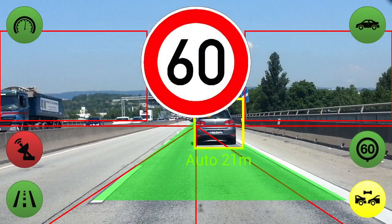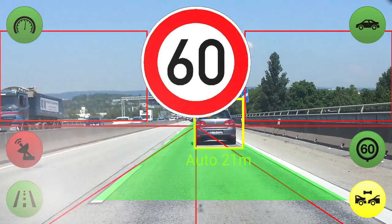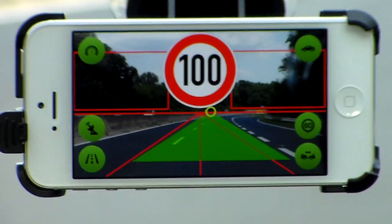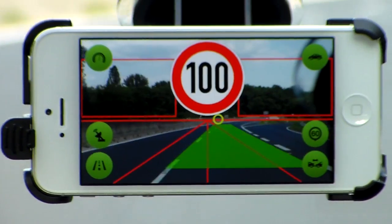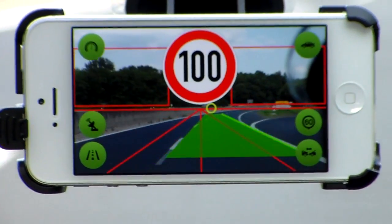If you are driving faster than the defined threshold over the current speed limit, the driver is both visually and acoustically warned.